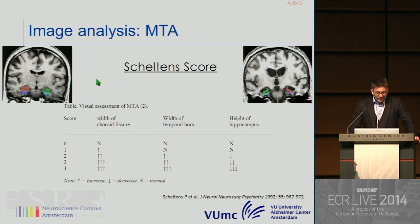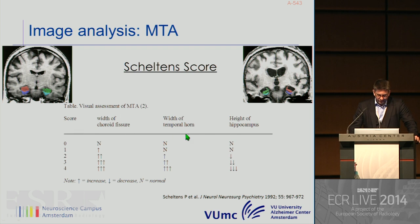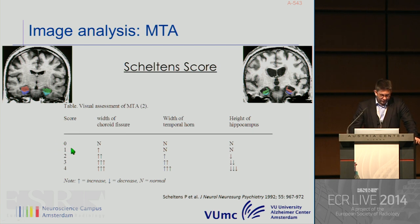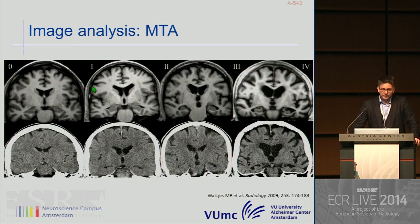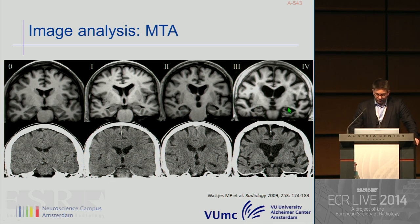Moving to the MTA: the hippocampus is very crucial in terms of memory decline. We use the so-called Scheltens scale, dealing with three relevant anatomic landmarks: the width of the choroid fissure, the width of the temporal horn, and the volume of the hippocampus. We deal with a score from 0 to end-stage atrophy score 4. Grade 0 is normal; grade 1 shows slightly widened choroid fissure; grade 2, already a slight volume loss of the hippocampus; and grades 3 and 4, the volume loss becomes more pronounced.